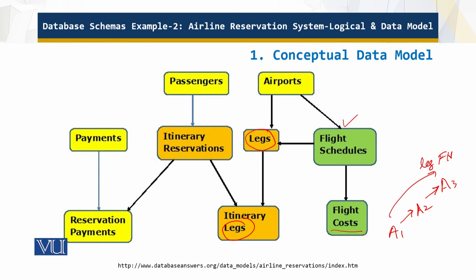We also have passengers and itinerary reservations. If you recall, an itinerary is essentially a seat. We have the seats, and then there are the reservation payments — itinerary, reservation, seat, payments, and all of those things together. This is the conceptual data model.